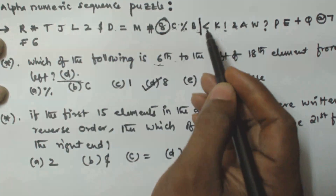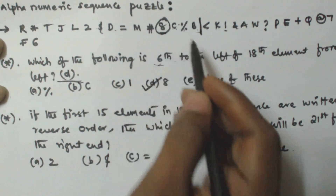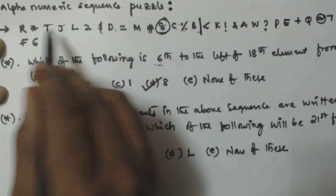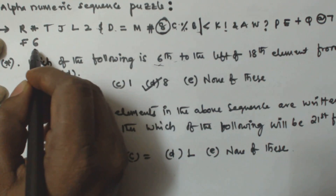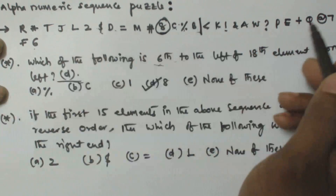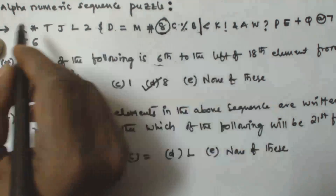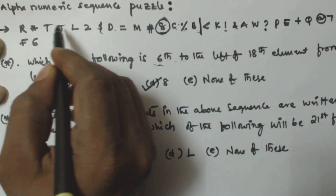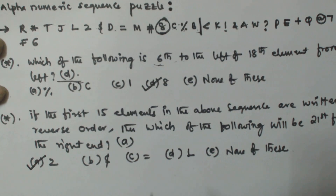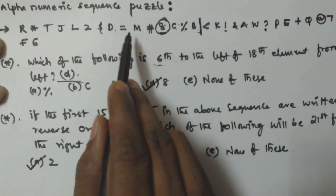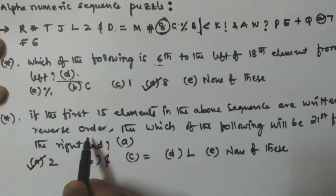After reversing, the sequence from position 16 onward remains: R * T J L 2 $ D = M # and so on start at position 16 because the first half is reversed. Counting from the right end, < is at position 15. The reversed first half starts at 16, so positions 16 17 18 19 20 21 — the 21st is 2. So option A, which is 2, is the correct answer.